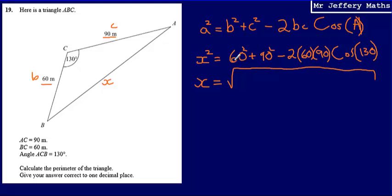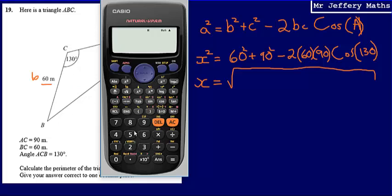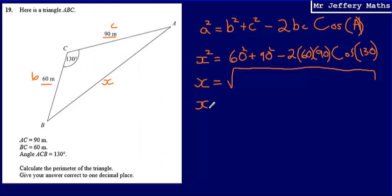So I just square root this bit here. I'm not going to bother writing that out again. I'm just going to type it into my calculator. So this length x is going to be the square root of 60 squared plus 90 squared minus 2 times 60 times 90 multiplied by cos 130. And so that gives me an answer of x is equal to 136.5.